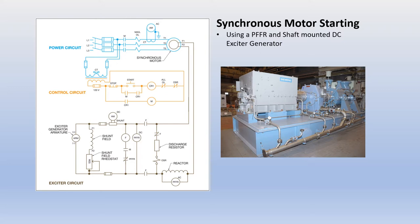To review, a synchronous motor will only run at synchronous speed when a DC voltage is applied to the rotor circuit, creating an electromagnetic field. This electromagnet in the rotor of the motor will cause the motor to pull into synchronous speed and lock in step with the rotating magnetic field of the stator of the motor.